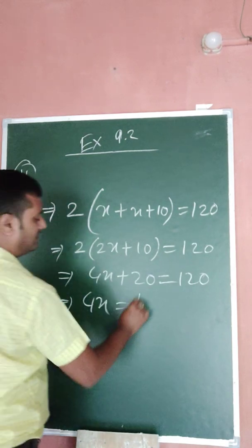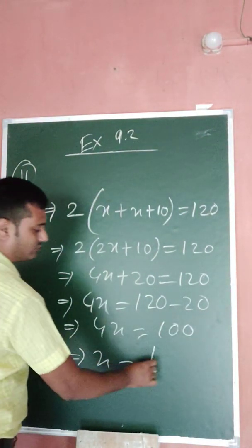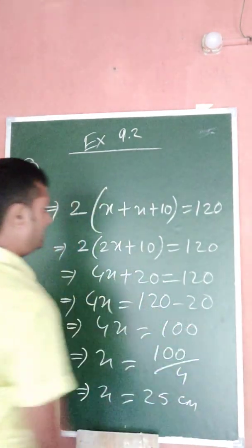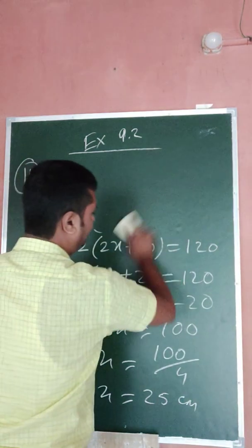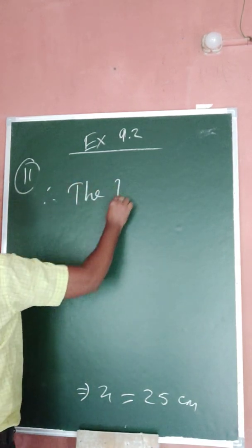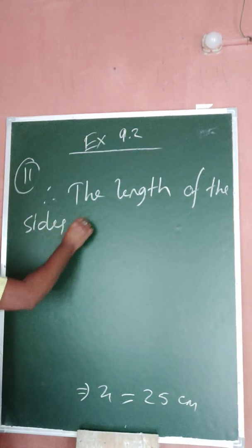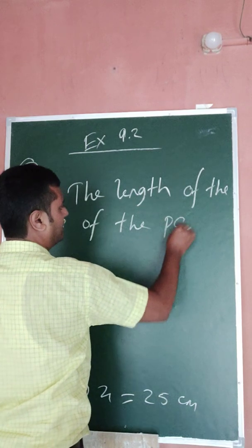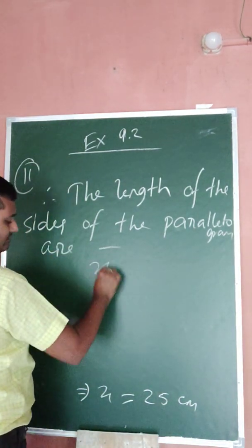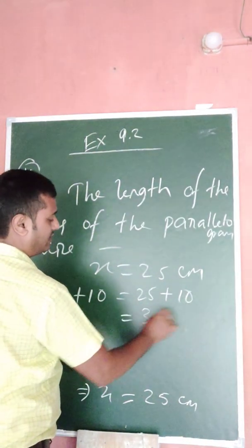When 20 goes to the other side it becomes subtraction, which gives x equals 25 centimeters. So one side is x which is 25 centimeters, and the other side is x plus 10, which is 25 plus 10 equals 35 centimeters.